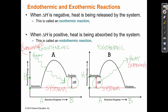In an exothermic reaction, A goes to B and the energy goes down. The energy is released into the surroundings as heat. If energy is being released from the system into the surroundings as heat, the surroundings get hot—they heat up. So if you're holding a reaction that's exothermic, it will heat up. If you're holding a reaction that's endothermic, it will cool down.